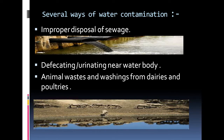Let's see the ways through which water gets contaminated. First is the improper disposal of sewage. Sewage is the wastewater coming from household activities like toilet or kitchen activity. If this sewage is improperly disposed into a surface water body, or if there is leakage of pipelines, it will also cause contamination of groundwater.